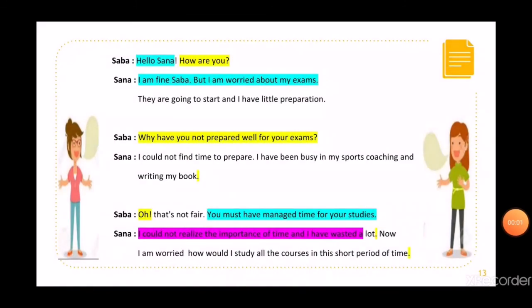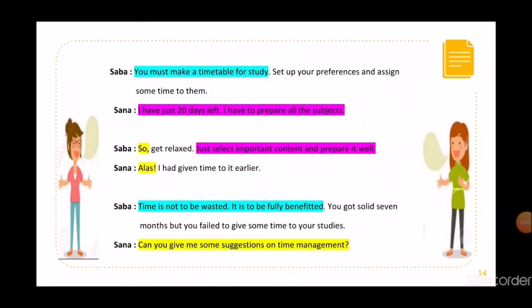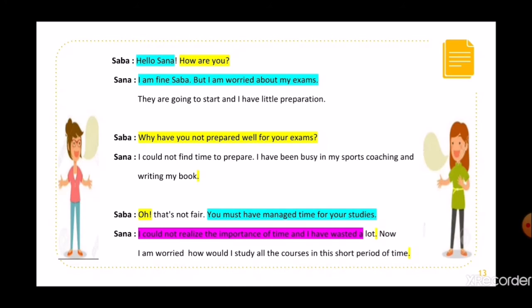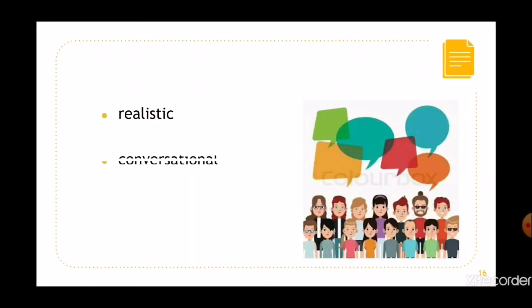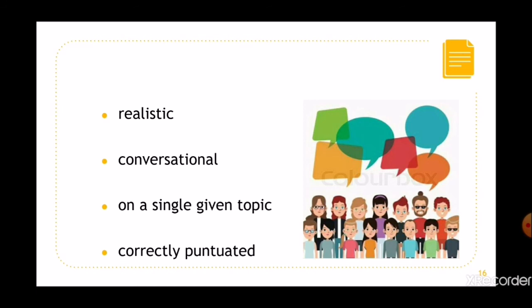The pink highlighted sentences are examples of simple English. The sentences highlighted in yellow show examples of punctuation according to the type of sentence — you can see the use of question marks for interrogative sentences and exclamatory marks for sudden emotions. These points all prove that our dialogue was realistic, conversational, on a single given topic, and correctly punctuated.